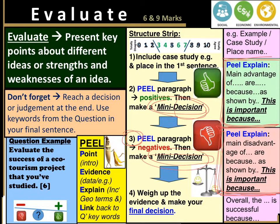Then, in your final paragraph, you're going to weigh up what you've said and make your final decision. You might want to say 'overall, the something is successful because' or 'overall, the something is significant because.' Just keep it short, but don't repeat your first sentence. On the next slide, we're going to look at an example of how this might look in terms of an answer.